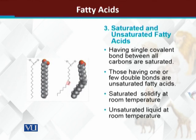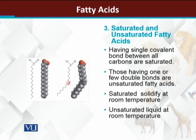Structurally, fatty acids are divided into two major categories: saturated fatty acids and unsaturated fatty acids. Saturated fatty acids are those in which all carbons are connected by single covalent bonds. Unsaturated fatty acids are those in which the molecule has one, two, or three double bonds at certain positions. As you can see in the diagram, the straight chain form is saturated, while the highlighted portion shows where a double bond is present, making it unsaturated.